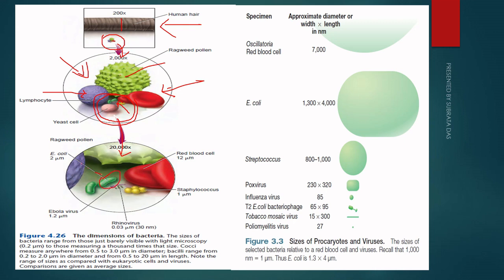At 20,000x zoom, this is an E. coli bacterial cell, whose size is about 2 micrometers. This is another bacterium, Staphylococcus, which is about 1 micrometer in size. The viruses, such as Ebola virus and rhinovirus, are much smaller than the bacterial cells. This is the comparative view of human cells, bacterial cells, and viruses.